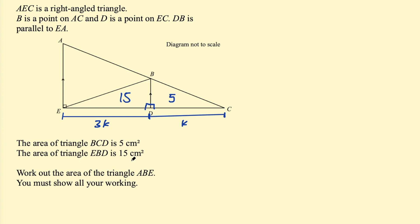From here, I'm going to draw a line from B perpendicular to line EA, creating another two triangles. I'll call this point X. This line is parallel to ED, so triangle EXB is going to be congruent to triangle BED.